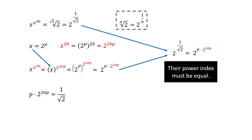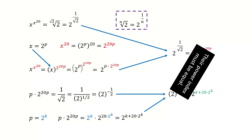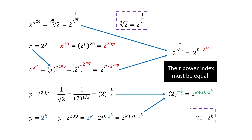For the right hand side, the square root 2 is equal to 2 to the power 1 half. We write the reciprocal into the negative power, so we got 2 to the power negative 1 half. Again, because the right hand side has the base 2, we use the same trick here. We define p equal to 2 to the power k, so instead of solving for p, we solve for k. After plugging in p equal to 2 to the power k, we simplify the right hand side. Putting these two parts together, we got this equation. Because both sides have the same base, their power indices must be equal, and we got this equation.